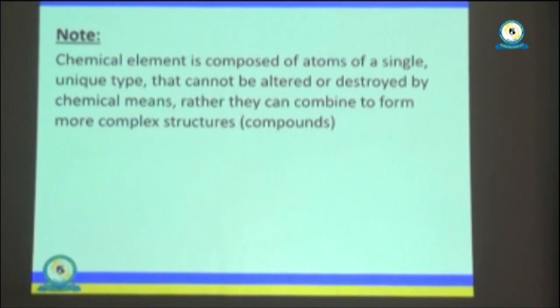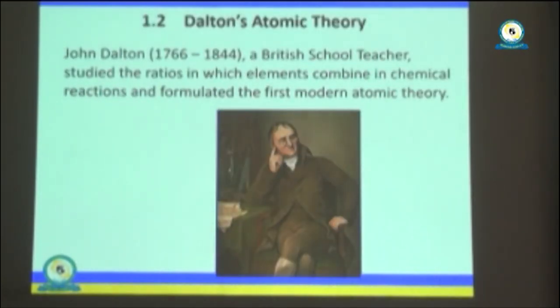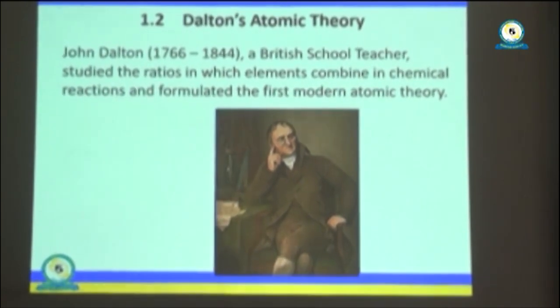We have noted that elements are composed of atoms of a single unique type that cannot be altered or destroyed by chemical means. They can, however, be combined to form more complex structures which we call compounds. Now let us move to another subtopic — the atomic theory. The origin of this theory was established by a British schoolteacher by the name of John Dalton, who studied the ratios in which elements combine in chemical reactions, and therefore formulated the first model of atomic theory.